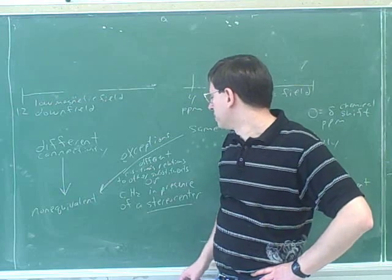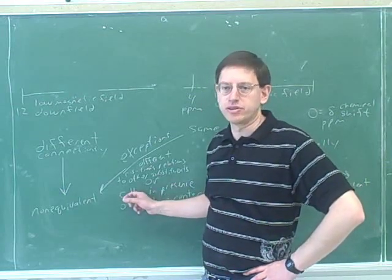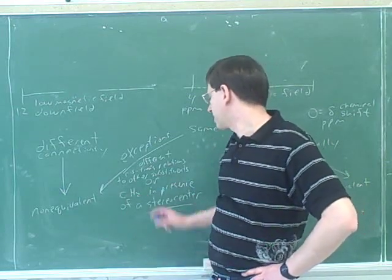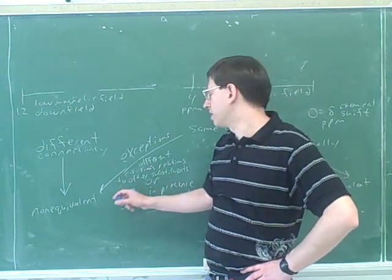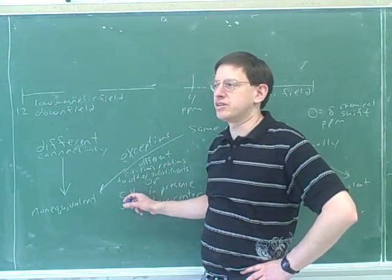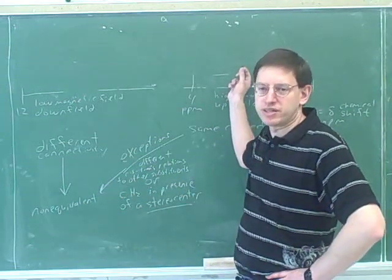I would think that the stereocenter would have more effect the closer it is to the CH2 group. So even though theoretically the stereocenter always makes these two hydrogens non-equivalent, if the stereocenter is a long way away, it might not be close enough that you can actually distinguish the two different peaks on your printout.